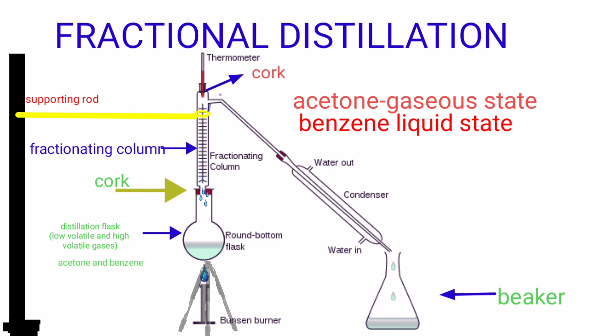Acetone is passed through the condenser. Finally, acetone is cooled by the condenser and collected in the beaker.